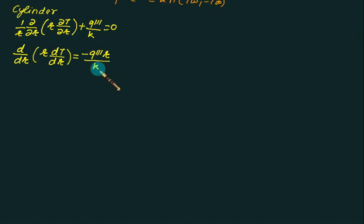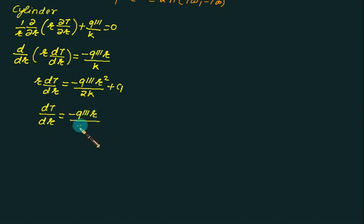Now we can integrate it one time. If we integrate we get r into dt by dr equal to minus q triple dash r square by twice k and some constant of integration c1. To solve it further we will divide by r on both sides. So we will get dt by dr equals to minus q triple dash r divided by twice k plus c1 by r, and now ready for integration.